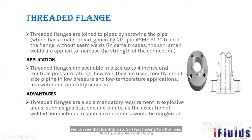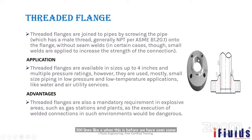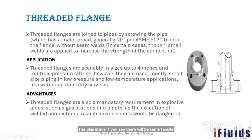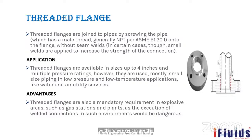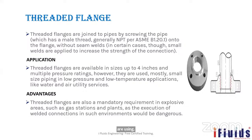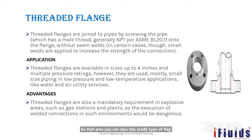Threaded flange is similar to the threaded joint seen earlier. The inside of the flange has a female thread, and the pipe has a male thread — so the flange screws onto the pipe. This type is used where welding is not allowable, such as with PVC or HDPE pipes that cannot be welded.